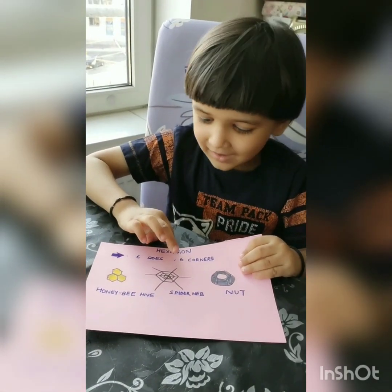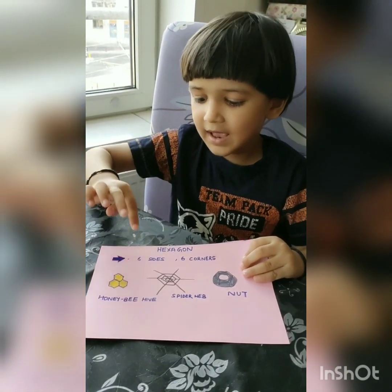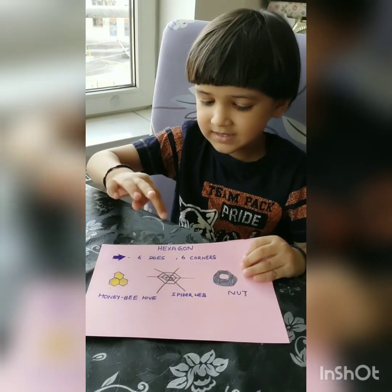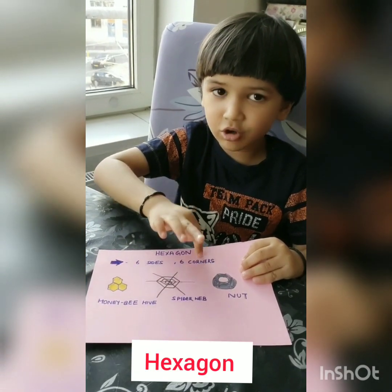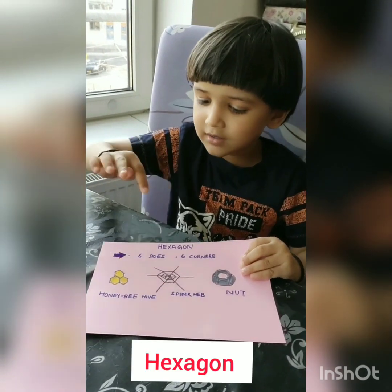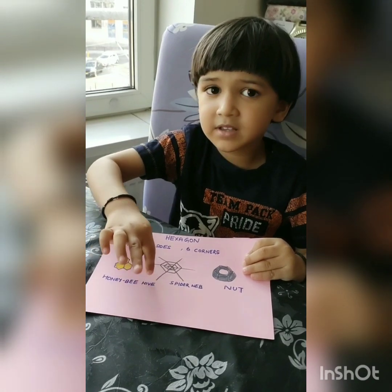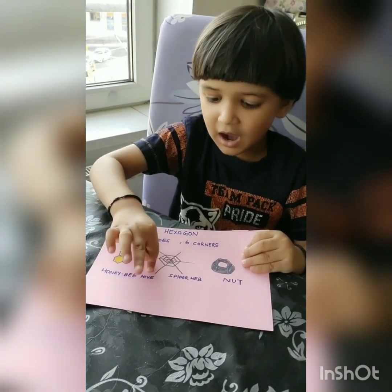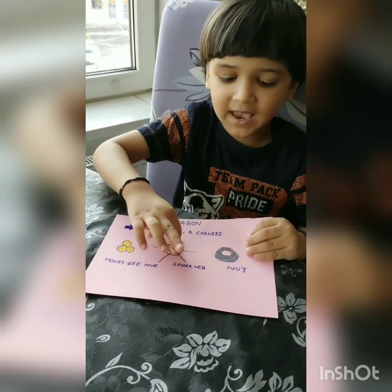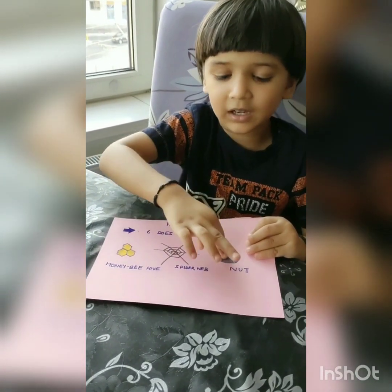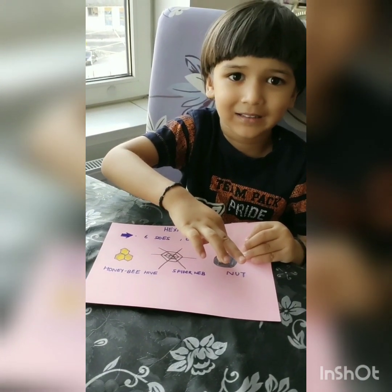Hexagon. Hexagon has six sides and six corners. Honey bee hive is hexagon. Spider web is hexagon. And a nut is hexagon.